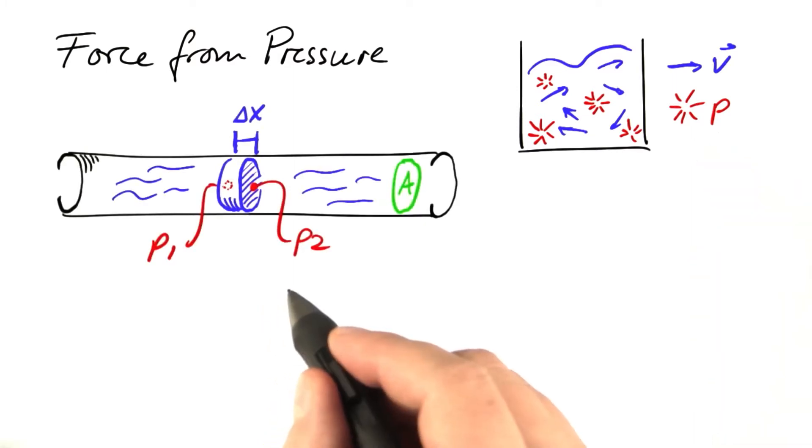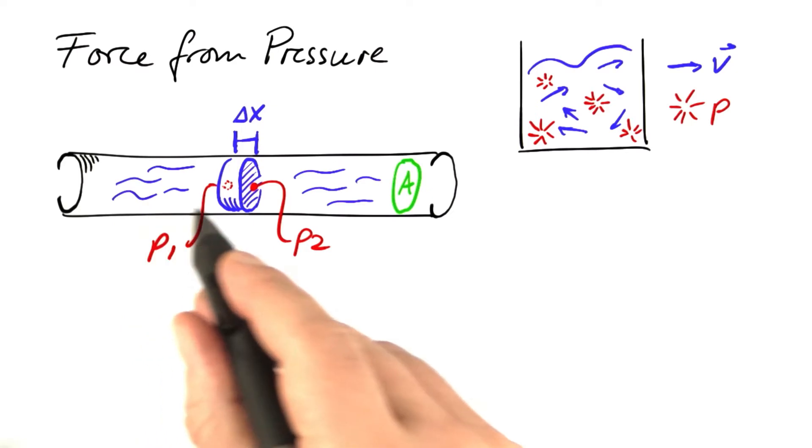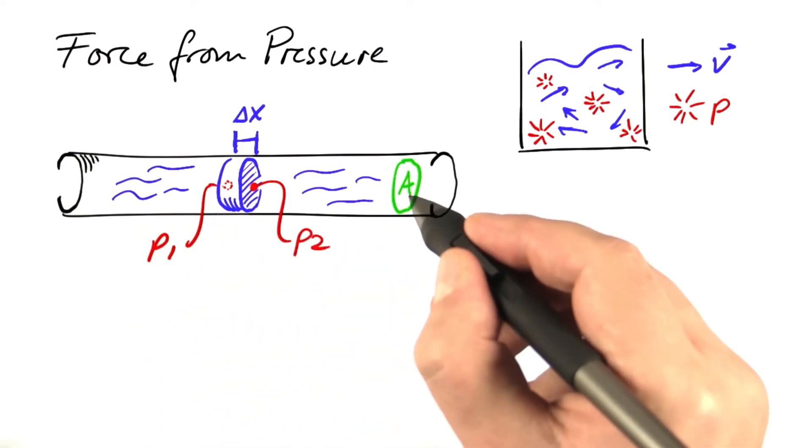To make things simple, we look at a one-dimensional situation. A straight pipe filled with fluid. Capital A is the cross-section area of that pipe.